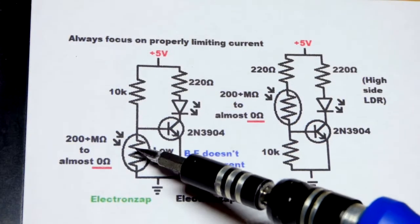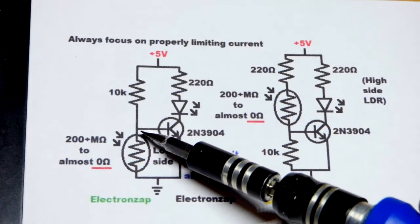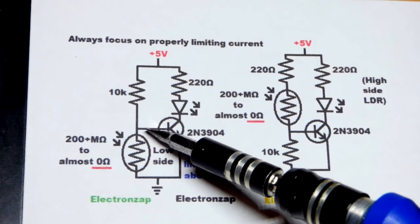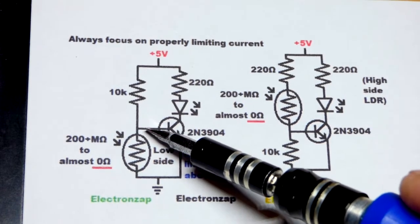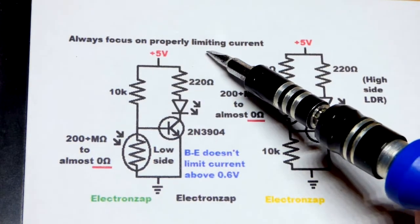Now in this video, we're going to focus on the light-dependent resistor as a voltage divider. We're not going to go over the basics of it as a voltage divider. I just want to talk about making sure you properly limit current when you are using one.